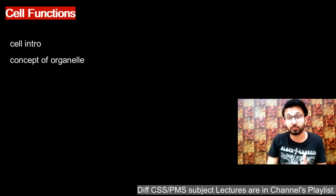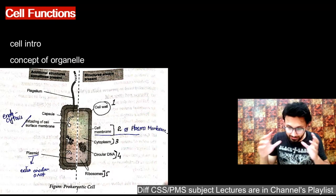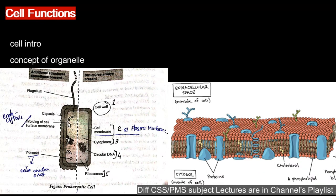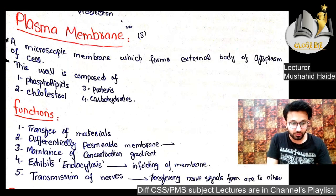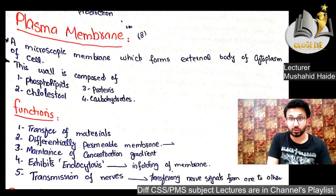First, we will discuss the plasma membrane. The cell exists in a liquid called cytoplasm. The plasma membrane is the boundary and external body of the cell. It is composed of phospholipids, proteins, cholesterol, and carbohydrates.